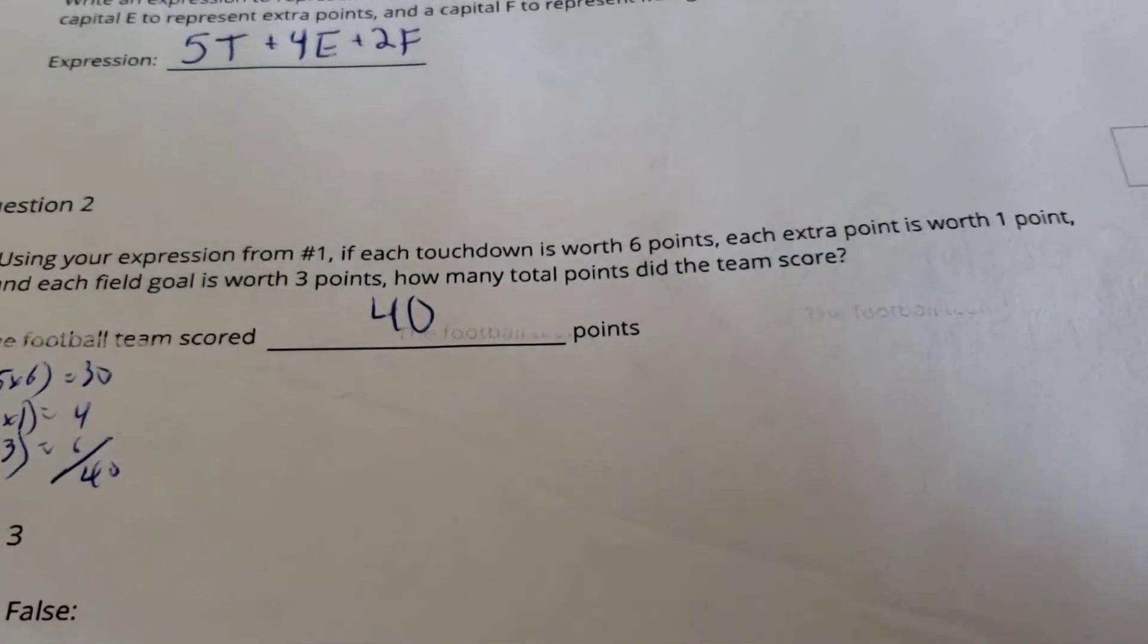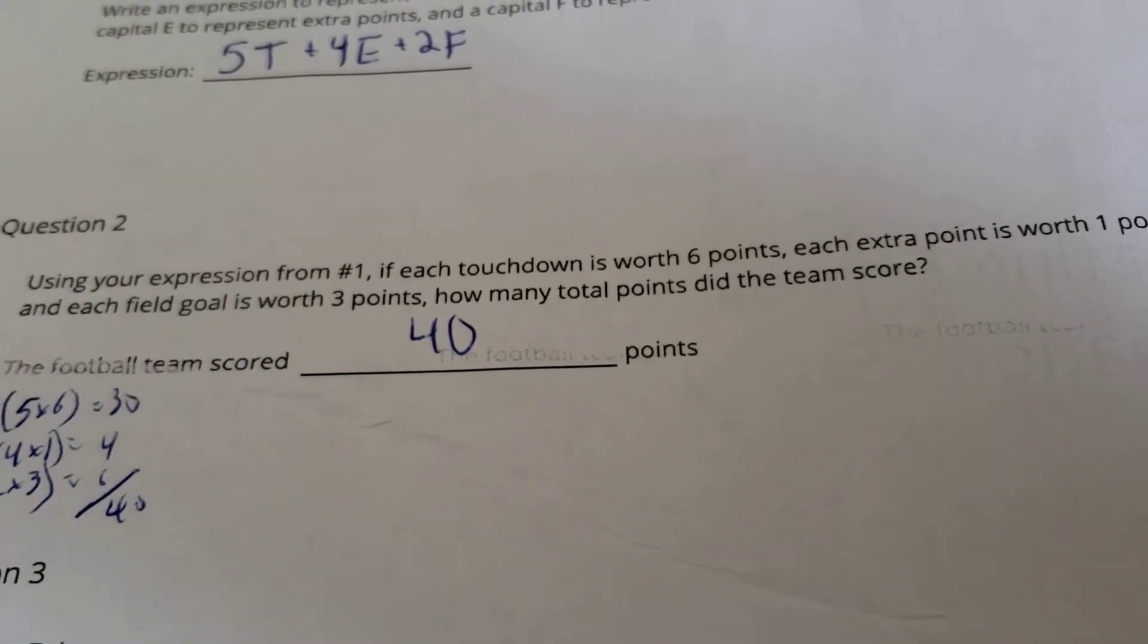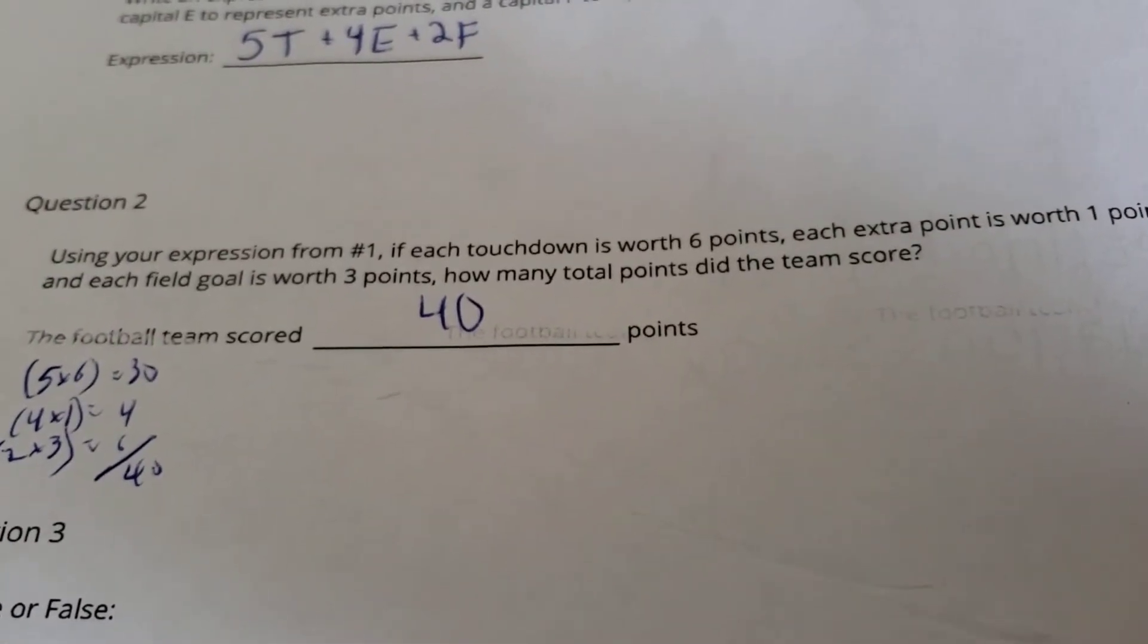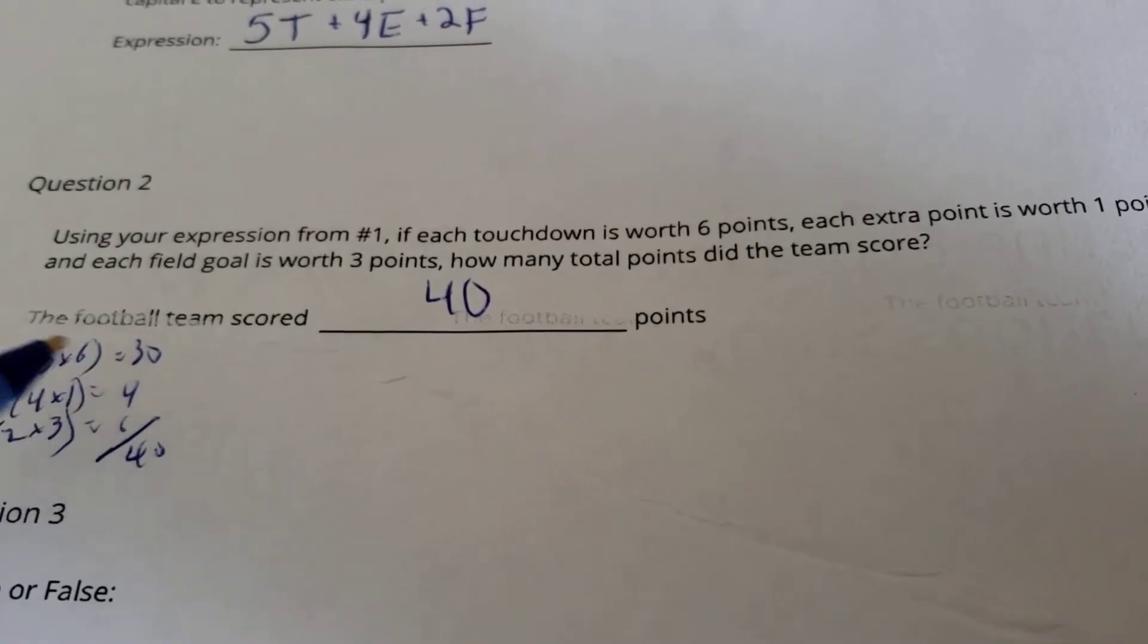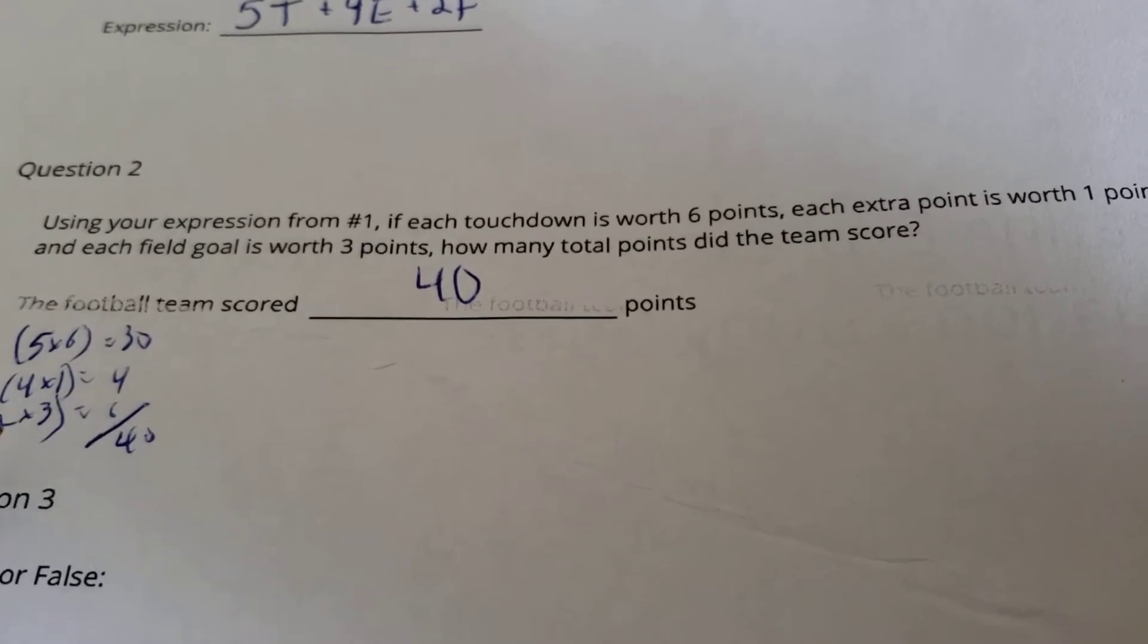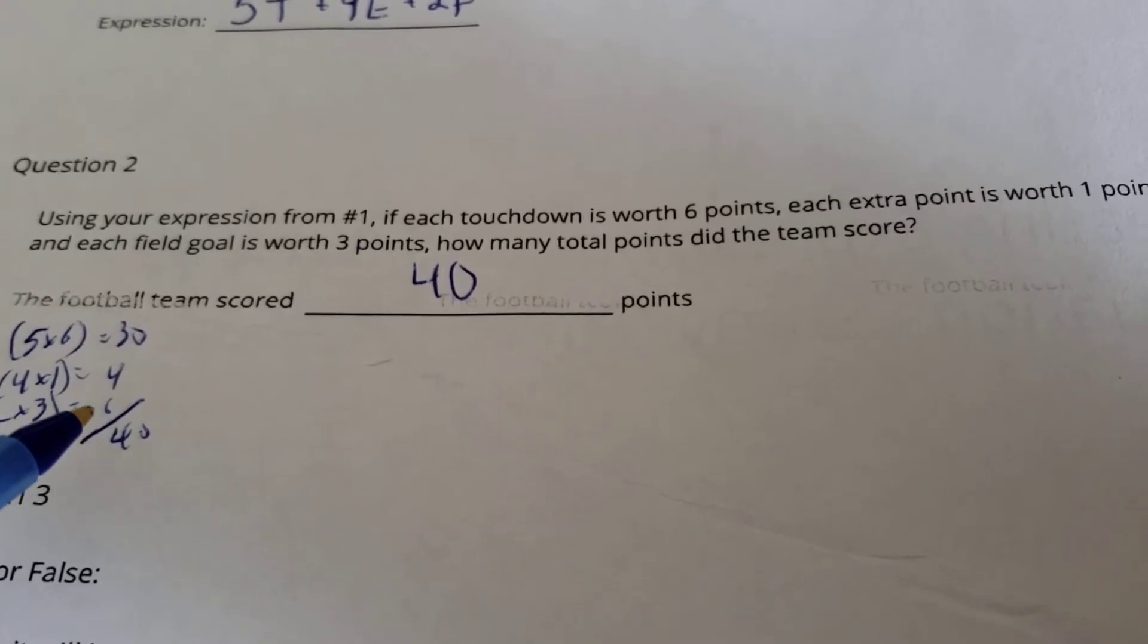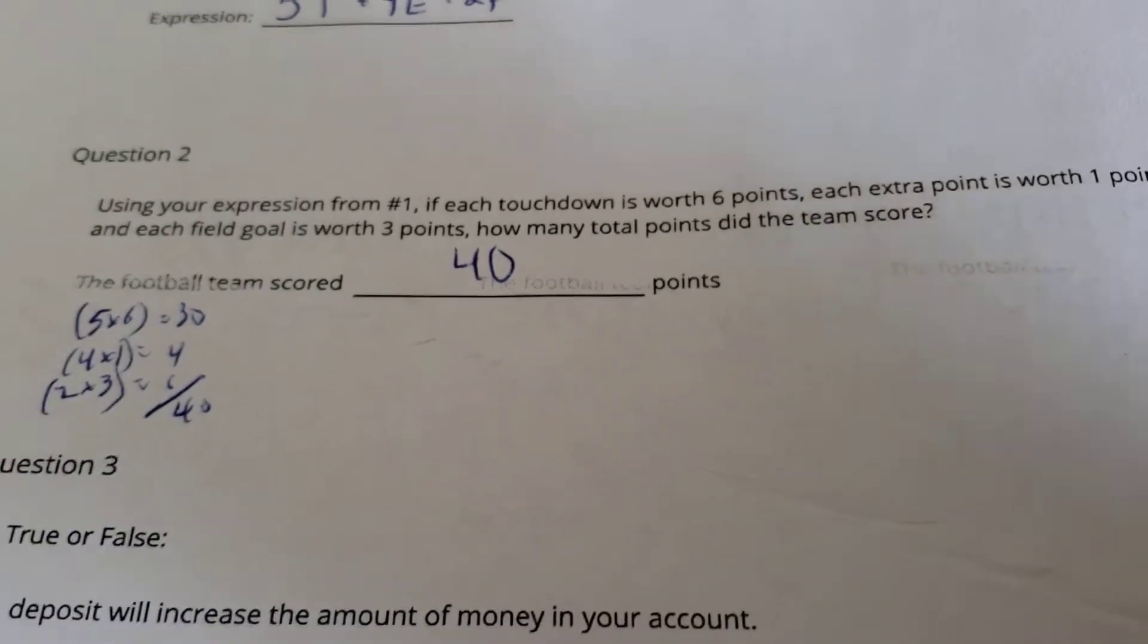If you want to know how much the team scored during this problem, touchdowns are worth 6 points, extra points are worth 1, and field goals are worth 3. Well, 5 touchdowns times 6 points gives you 30. 4 extra points times 1 point gives you 4. 2 field goals times 3 points each gives you 6. Add them all up, and you get 40 total points.